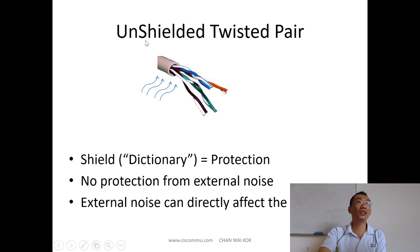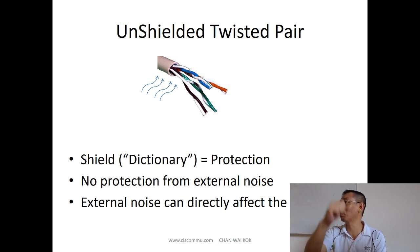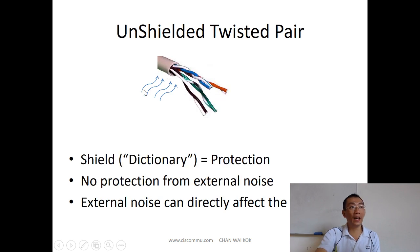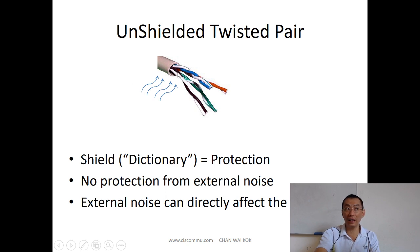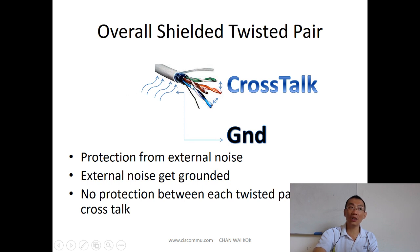The next thing is unshielded twisted pair. The word 'shield' means protection — just like in Star Trek: shields up. If you have EMI noise, it will directly affect an unshielded cable. With a shielded cable, there's a metal or aluminum foil protecting the cable from the outer layer. If EMI noise comes in, it will be grounded, so external noise cannot affect the cable inside.